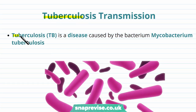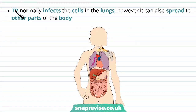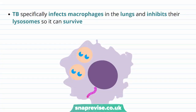Tuberculosis, or TB, is another very important bacterial disease and a major problem in the world. The bacterium that causes it is called Mycobacterium tuberculosis, abbreviated as M. tuberculosis. The TB bacterium normally infects the cells found in the lungs, but it can also spread to other parts of the body. Specifically, TB enters cells known as macrophages found in the lungs, and it inhibits their lysosomes so that it's able to survive inside them.